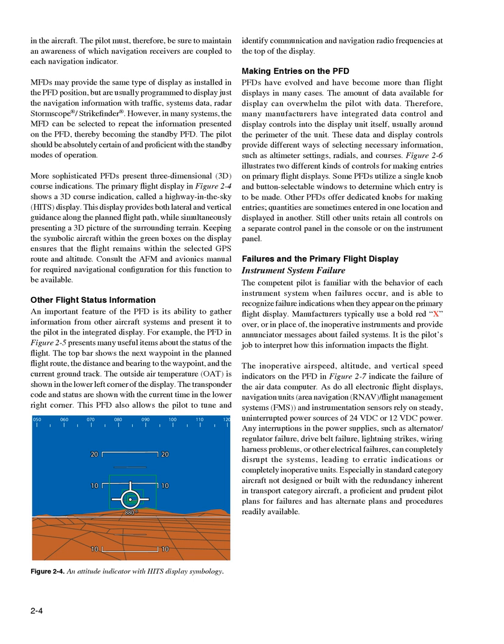Figure 2-6 illustrates two different kinds of controls for making entries on primary flight displays. Some PFDs utilize a single knob and button-selectable windows to determine which entry is to be made. Other PFDs offer dedicated knobs for making entries. Quantities are sometimes entered in one location and displayed in another. Still other units retain all controls on a separate control panel in the console or on the instrument panel.